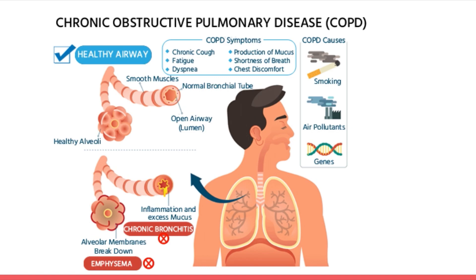In chronic bronchitis there is inflammation and excess mucus. In emphysema there is alveolar membrane breakdown, resulting in air retention and hyperinflation. The patient presents with symptoms like chronic cough, fatigue, dyspnea, production of mucus, shortness of breath, and chest discomfort.